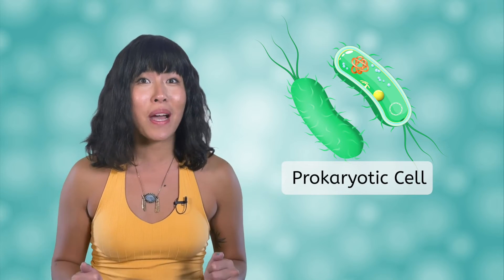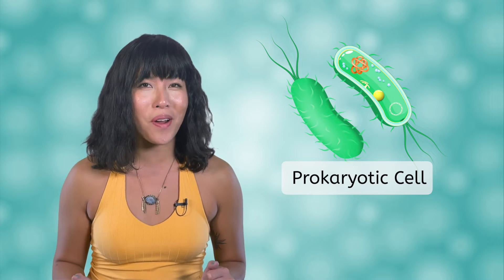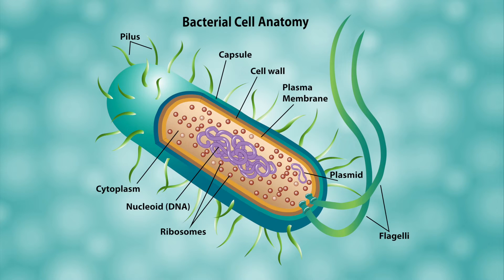We've already talked quite a bit about cells and pointed out that living things are made of cells. But what exactly is a cell? To answer that, let's look at some of the individual parts of a simple cell, like the prokaryotic bacteria cell we saw before. We'll start inside the cell. The big clump of purple stuff in the diagram is the DNA, which clumps together in a region called the nucleoid.